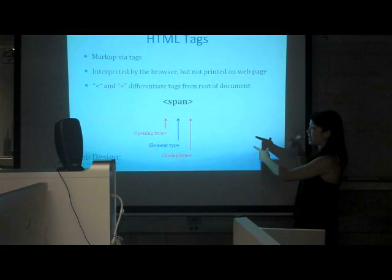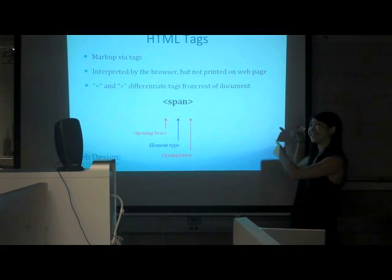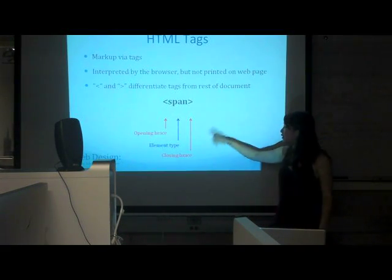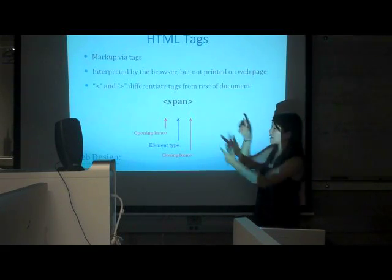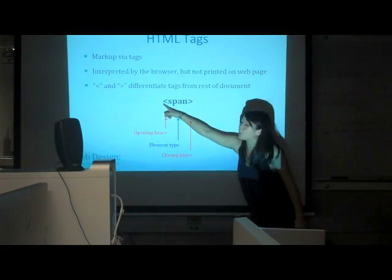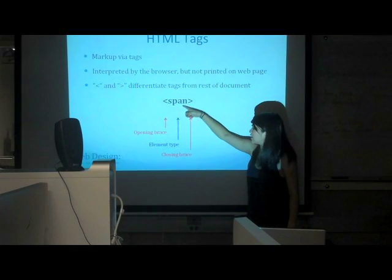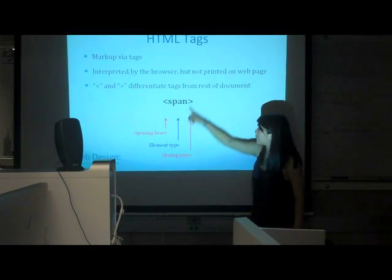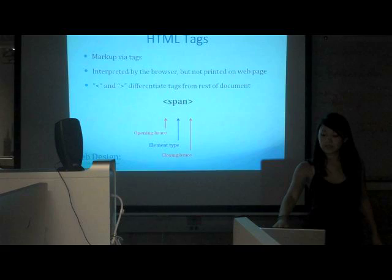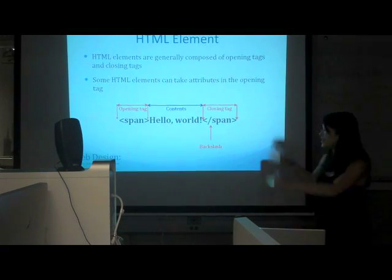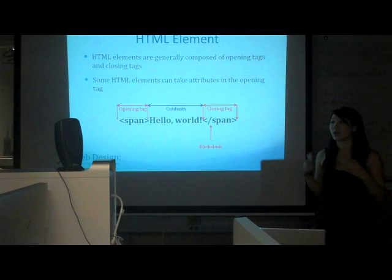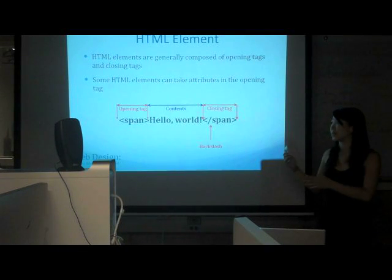You use less-than and greater-than signs to differentiate tags from the rest of the document. For example, here's a beginning span HTML tag. So you need the open brace, the element type, and then a closing brace right after. And using these tags, you can enclose any text to tell the browser what kind of element it is.